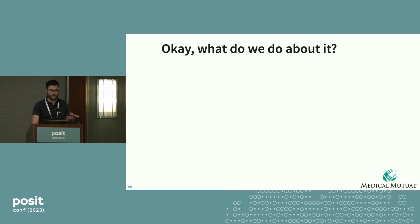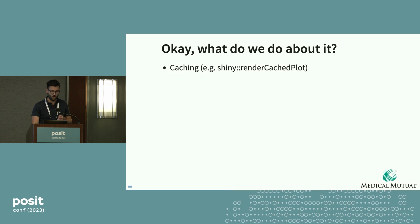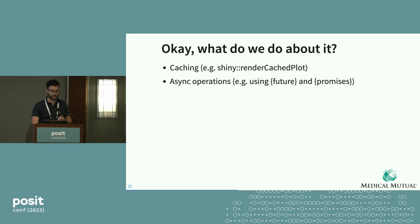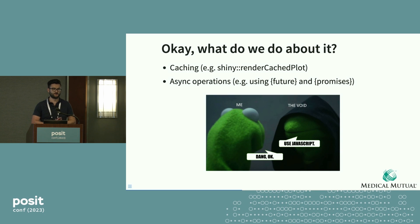So we have a sense for what the problem is — what are we going to do about it? There have been plenty of talks about scaling Shiny: caching different assets, asynchronous operations, large IO-type stuff. But that's not what we're here to talk about. We're here to talk about something a little weirder: using JavaScript to fix this problem.